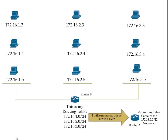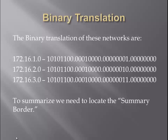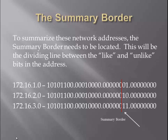These addresses are summarized into a 172.16.0.0 slash 22 address and sent to RouterA. Here is how this is accomplished. First, you take the three networks and convert them into binary format. From this point, we have to locate the summary border — where all like bits end. You start from the furthest left bit and work all the way to the right until all the like bits end, as indicated by the red bar there.